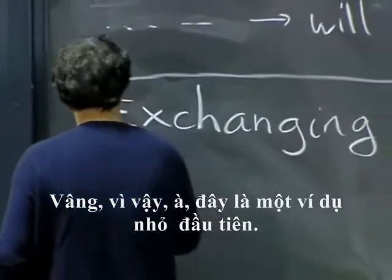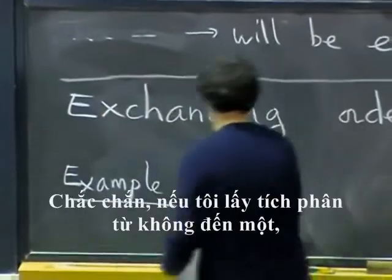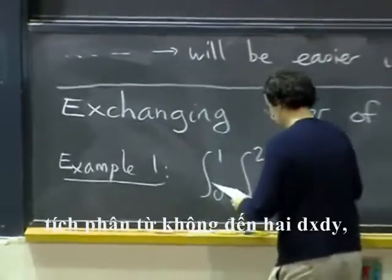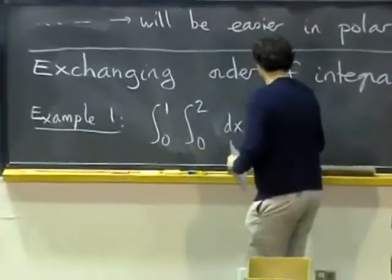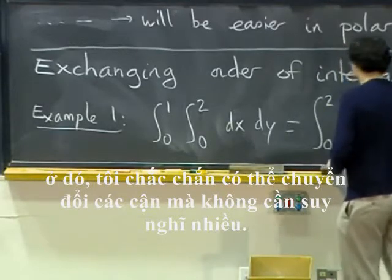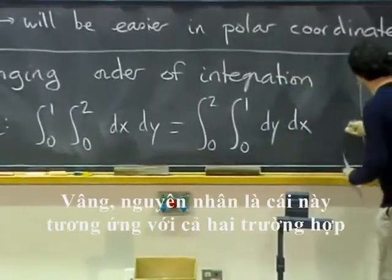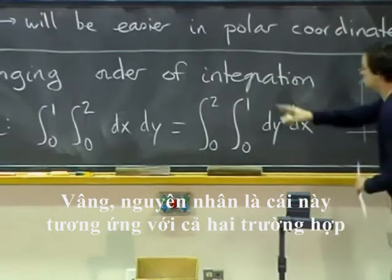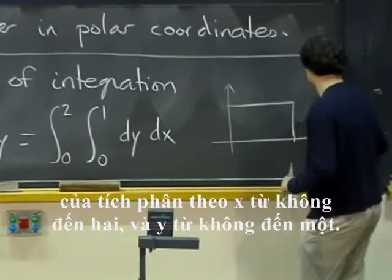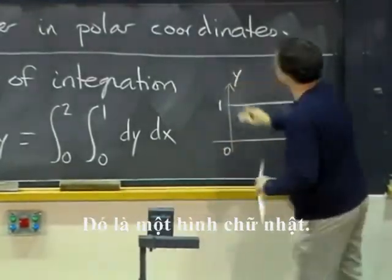OK, so well, here is a first baby example. Certainly, if I do integral from zero to one, integral from zero to two dx dy, there I can certainly switch the bounds without thinking too much. What is the reason for that? Well, the reason for that is this corresponds in both cases to integrating x from zero to two and y from zero to one. It is a rectangle.